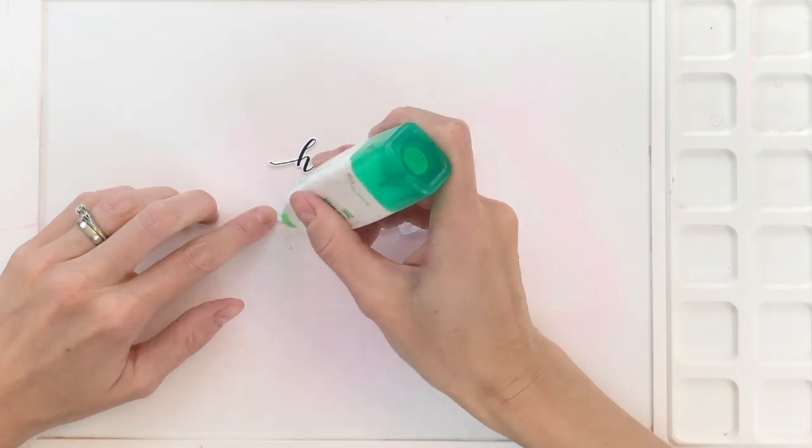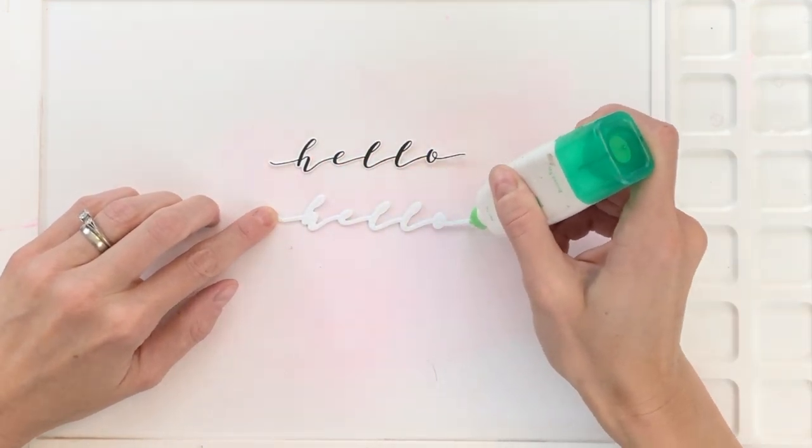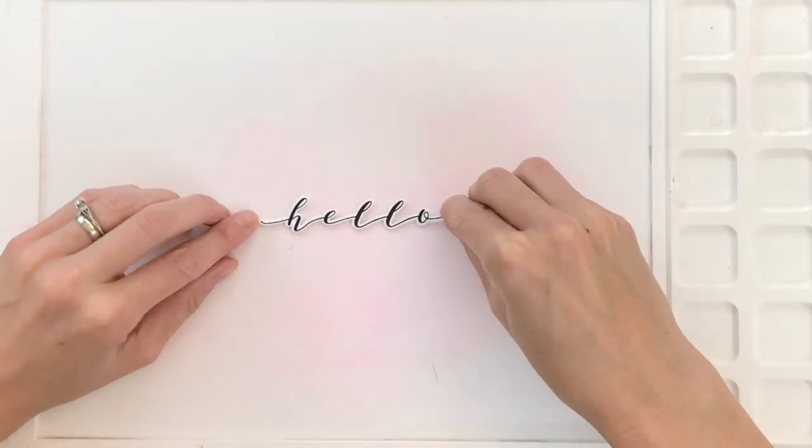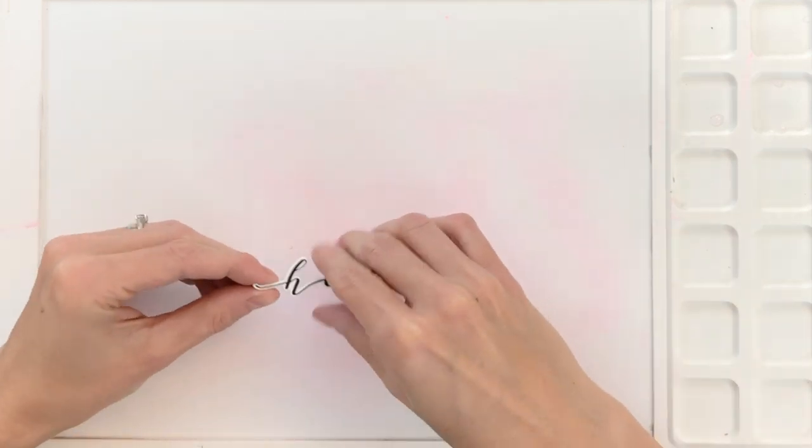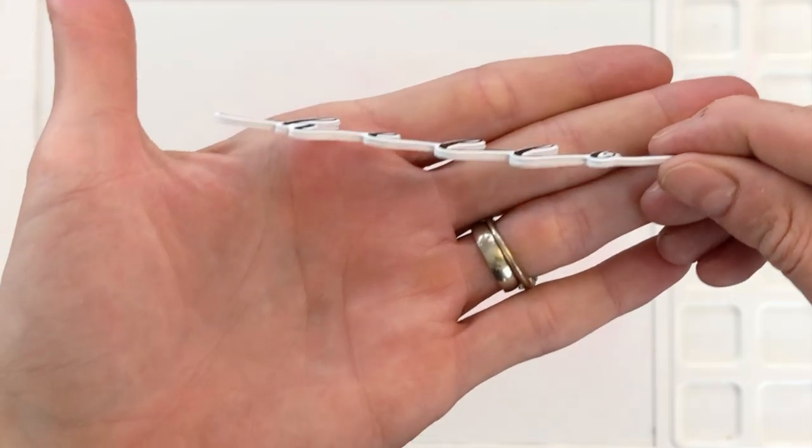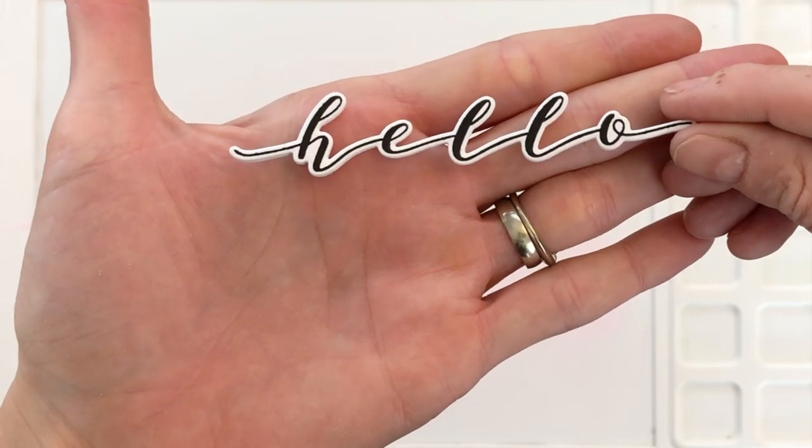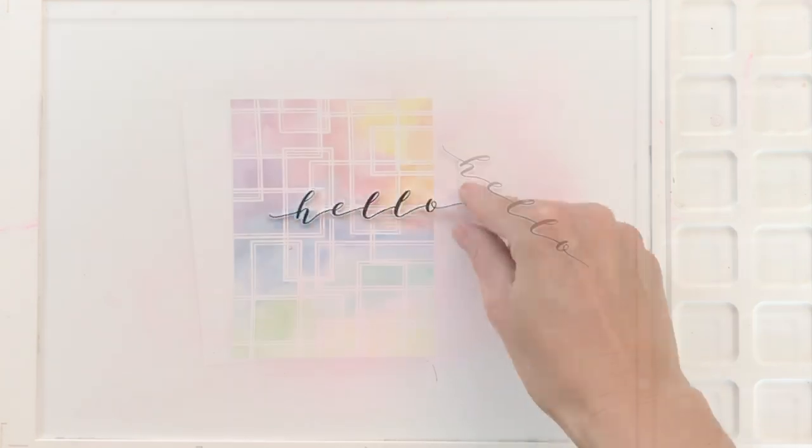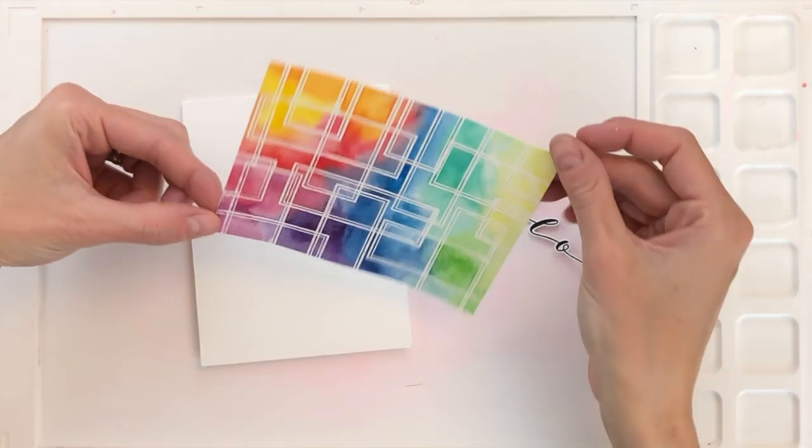Once I've added my adhesive and stacked all three layers together, I'm going to stack the fourth stamped hello right on top. I like to pinch the sides a little bit to make sure that all those hellos are stacked up perfectly on top of each other. Now I'll set that aside and I'm ready to complete this card.